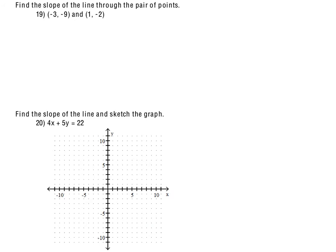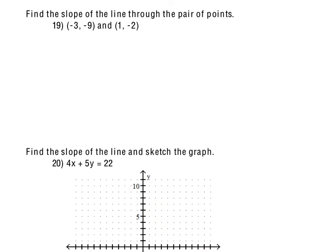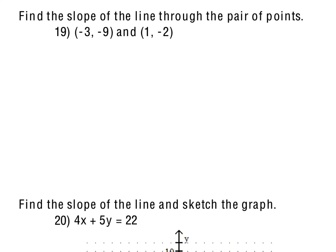Starting with number 19, finding the slope of the line that goes through those two points. Hopefully you remember this formula. You can always sketch out a little graph too, but the formula goes like this: y sub 2 minus y sub 1 over x sub 2 minus x sub 1. It doesn't really matter which one are the 2's and the 1's, but I typically kind of keep it lined up. Now it's going to be the negative 2, because that's the y coordinate, minus the negative 9. So I'm just going to go plus 9. And I started with negative 2, so that means I have to start with 1 minus the negative 3, so really plus 3.